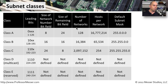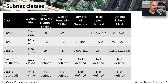A Class A network would have 128 possible networks with over 16 million hosts. For Class C, the first four bits started with 1-1-0, meaning the value was between 192 and 223 decimal, and a mask of 255.255.255.0 would be automatically assigned, allowing over two million networks with 254 hosts per network.